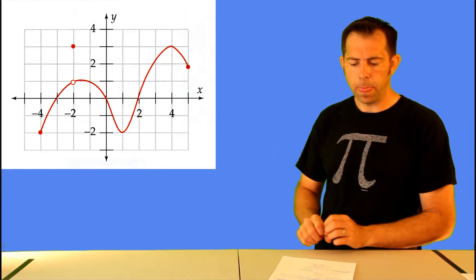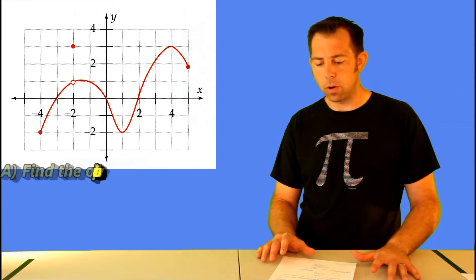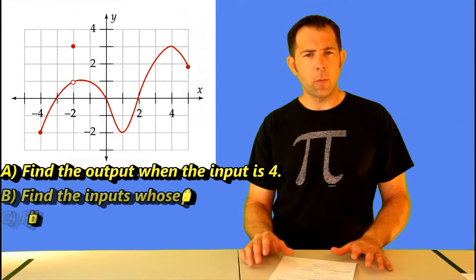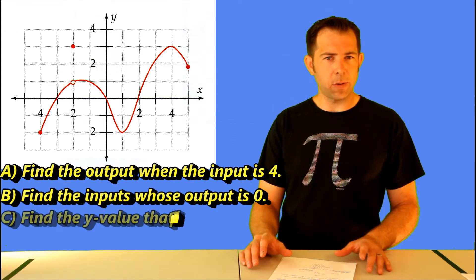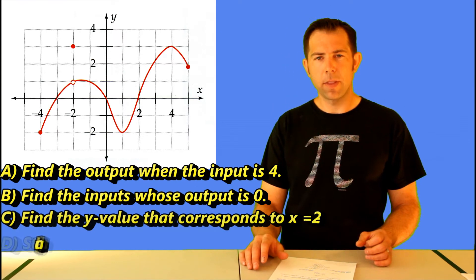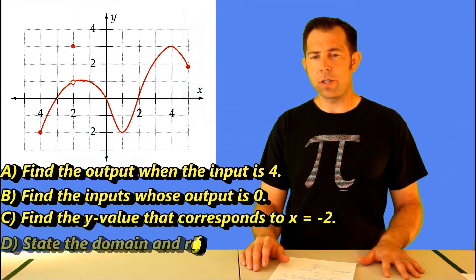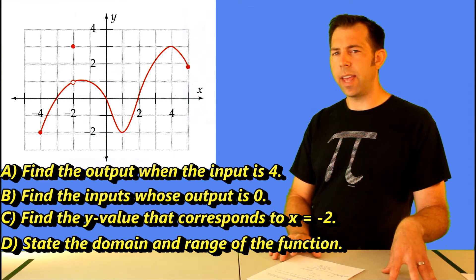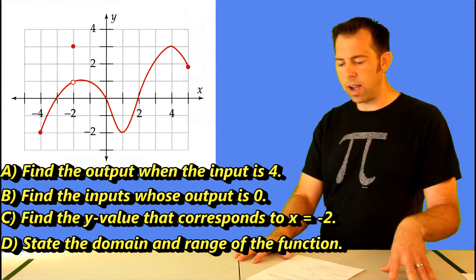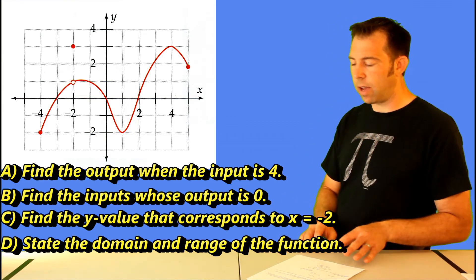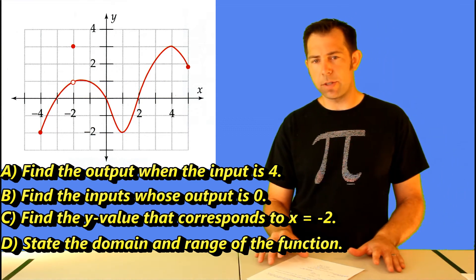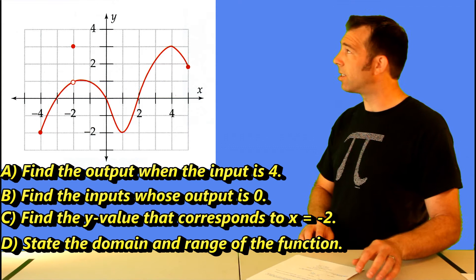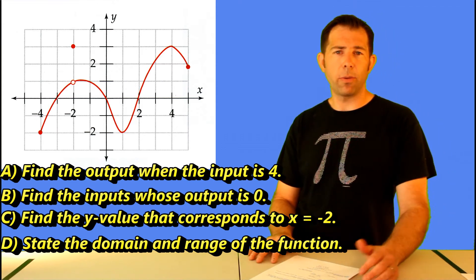Now use this graph for an example. Find the output for the input four. Find the inputs whose output is zero. All you really need to know for this is that input is referring to the x-value and the output is referring to the y-value. So looking at the graph, you can see that when x is four, the y-value is three. Now the y-value is zero in three different places. When x is negative three, when x is zero, when x is two.